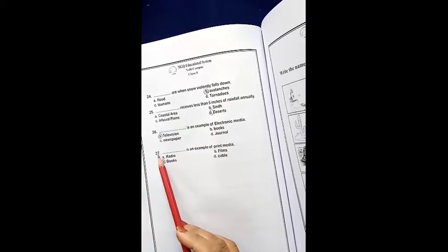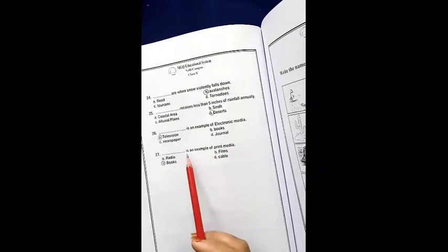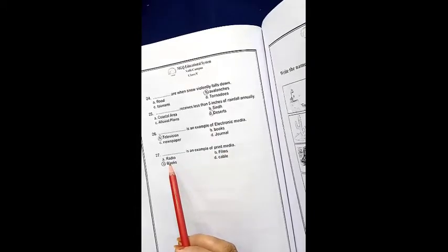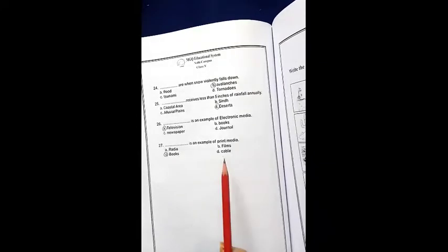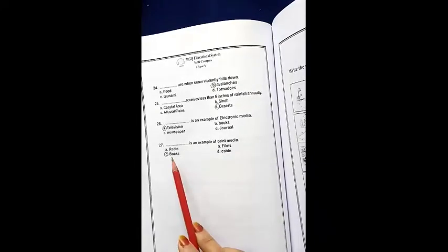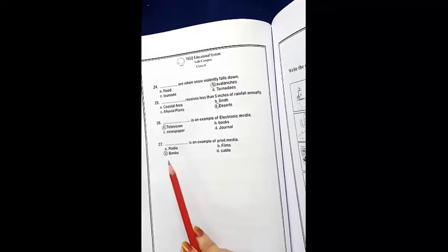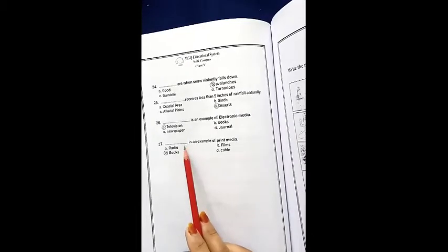Next, we have 27 MCQs. Dash is example of Print Media. A, we have Radio. B, we have Film. C is Book. D is Cable. Radio, Film, Book, or Cable. So we have the right option, C, Book is the right answer.